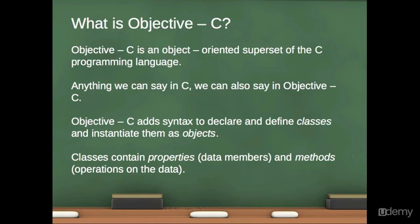But Objective-C also adds the concept of a class. It adds syntax to declare and define classes and instantiate them as objects. And if you've not programmed in an object-oriented programming language before, we're going to cover that in Unit 1. A class is a template for some kind of object. A class contains properties, which are data, and methods, which are operations on that data. We can think of methods as functions that operate on the data in a class, and a class wraps all of that up into an abstract idea of what an actual object will do.